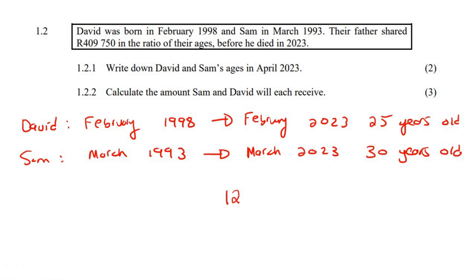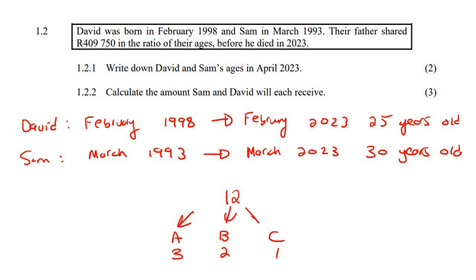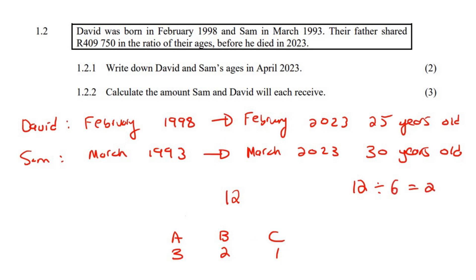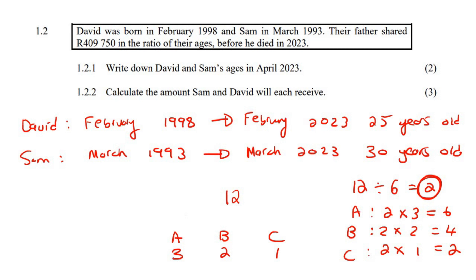For example, take the number 12 divided among three people — Adam, Boosie, and Kelvin — in the ratio 3 to 2 to 1. You divide 12 by the sum of the ratio parts: 3 plus 2 plus 1 equals 6, giving a unit value of 2. Then Adam gets 2 times 3 equals 6, Boosie gets 2 times 2 equals 4, and Kelvin gets 2 times 1 equals 2. So Adam gets 6, Boosie gets 4, and Kelvin gets 2 out of the 12 parts.